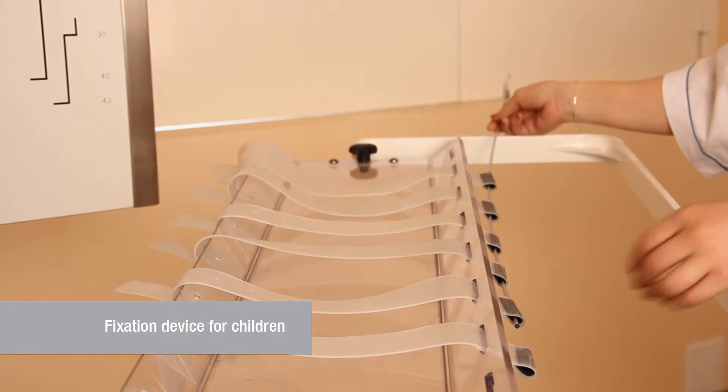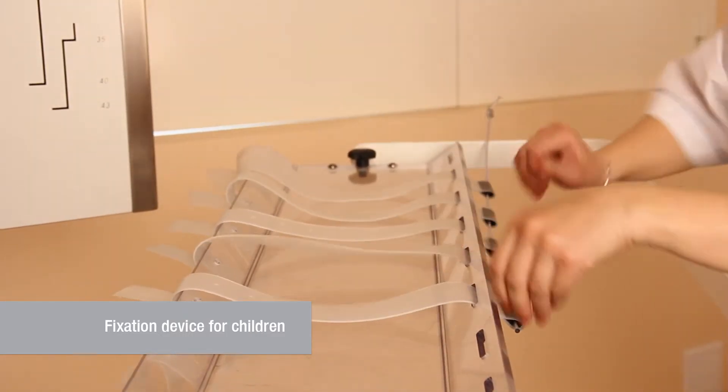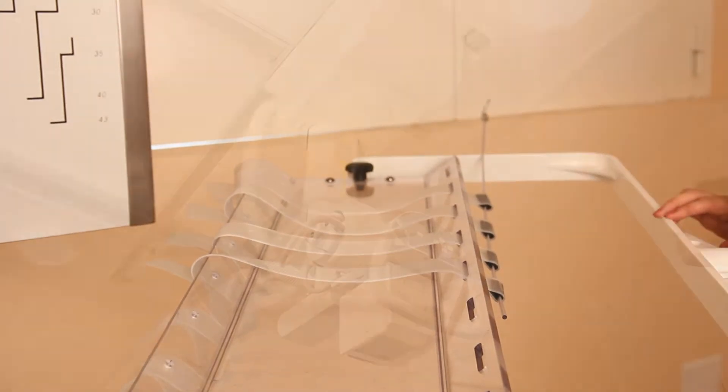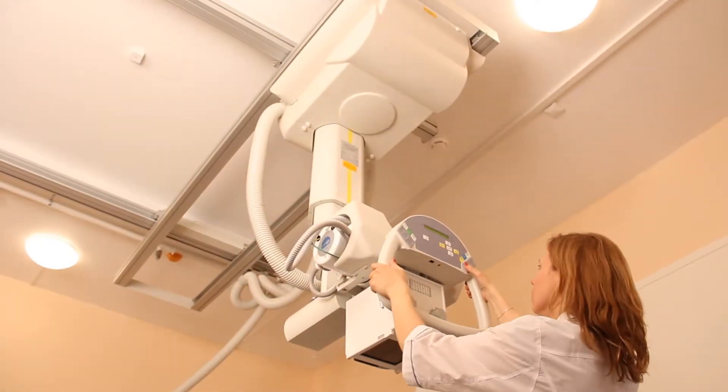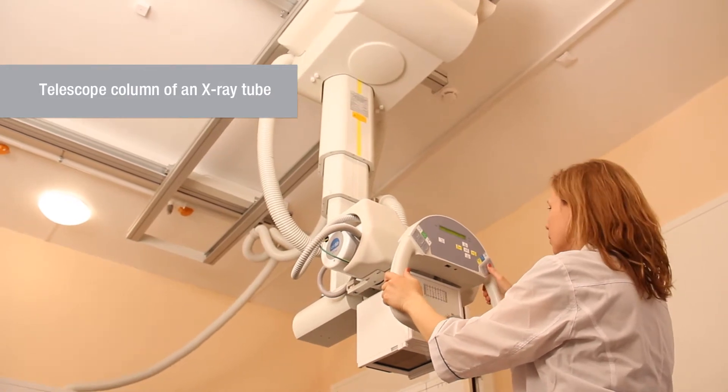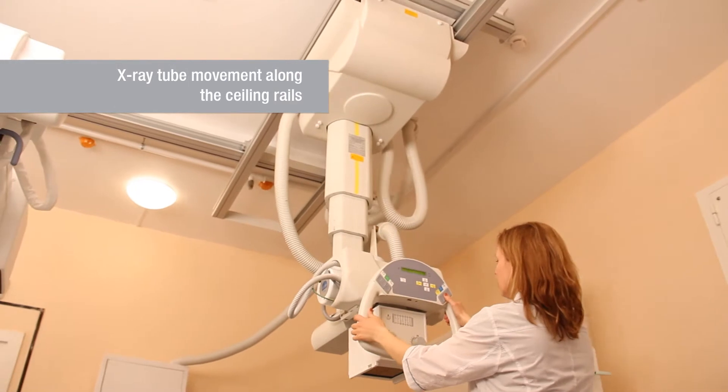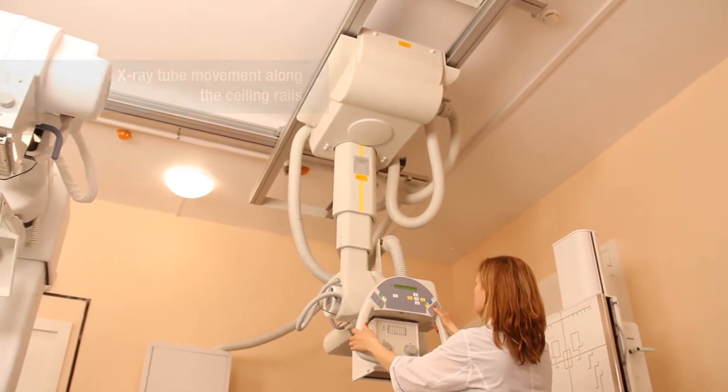Fixation of the youngest patients is done in a horizontal position. Combination of the telescopic stand with ceiling rails in combination with wheelchair or wheeled bed widens the range of tube positioning.